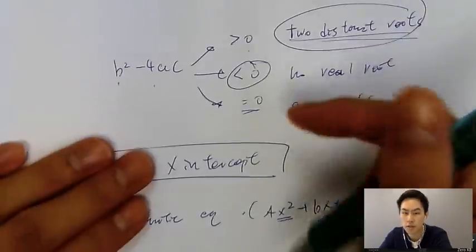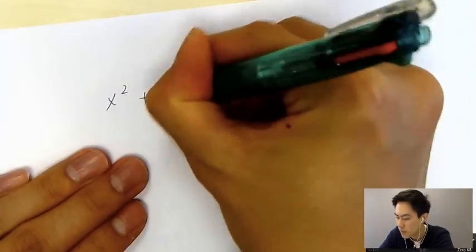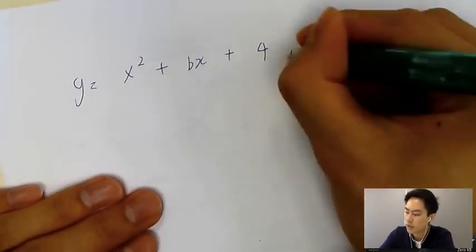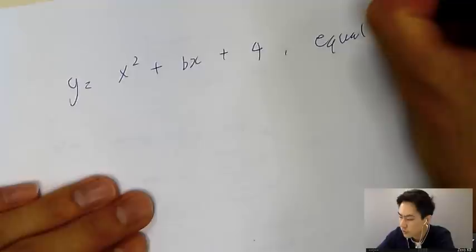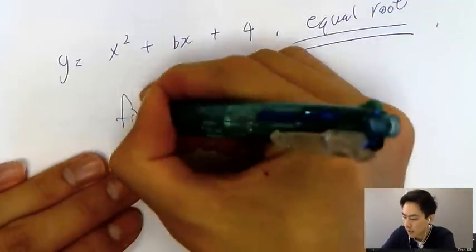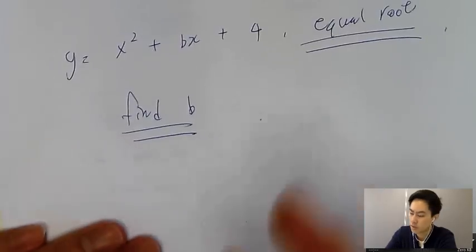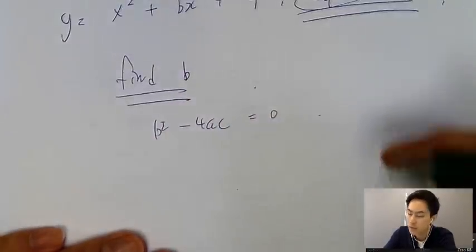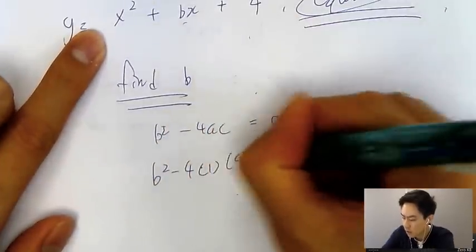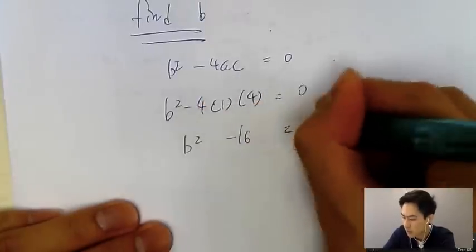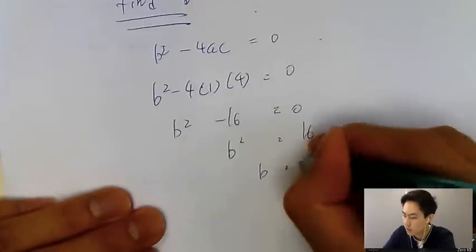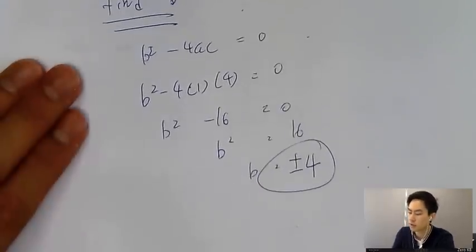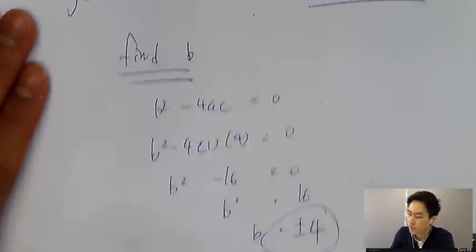In an IB exam, they won't just ask for the concept. Instead, they'll give you something like: ax squared plus bx plus 4 has equal roots — find the value of b. Since equal roots means b squared minus 4ac equals zero, we get b squared minus 4 times 1 times 4 equals zero. So b squared minus 16 equals zero, b squared equals 16, and b equals plus or minus 4. So b can be 4 or minus 4.